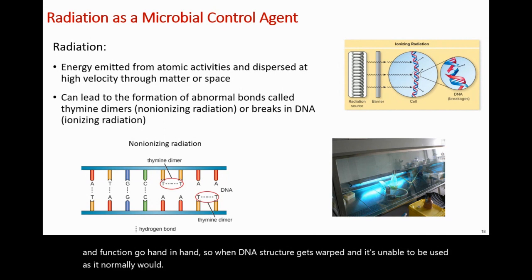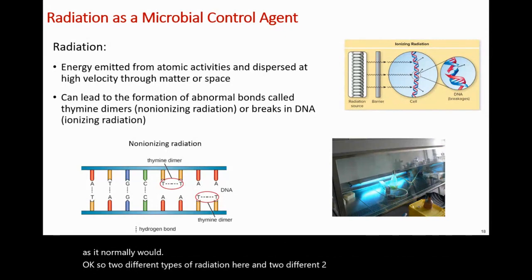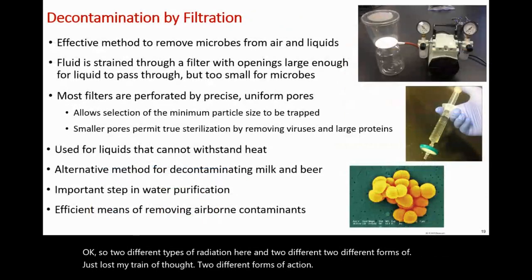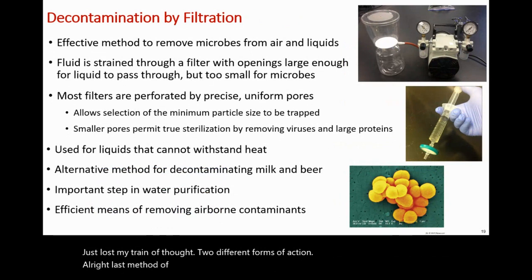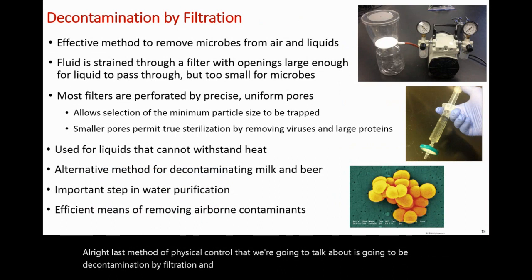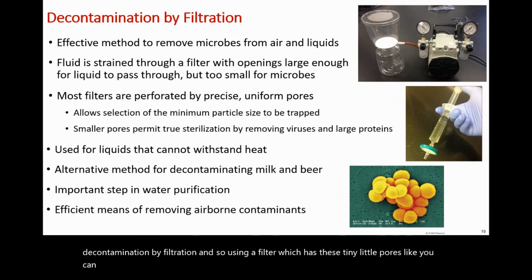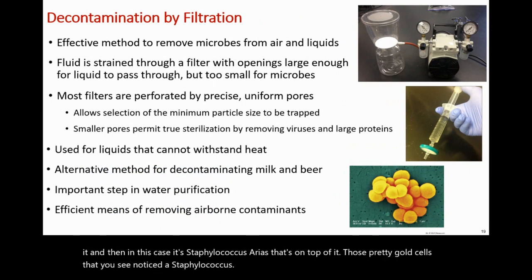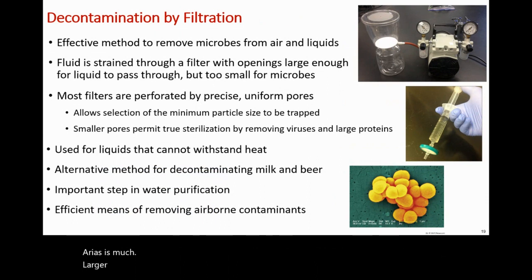So there are two different types of radiation with two different forms of action. The last method of physical control is decontamination by filtration. Using a filter with tiny pores — as shown in the image with the green background — you can see those small holes, and Staphylococcus aureus cells sitting on top of it are much larger than those pore sizes.